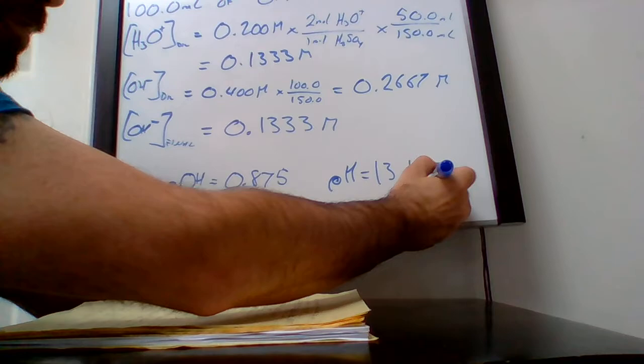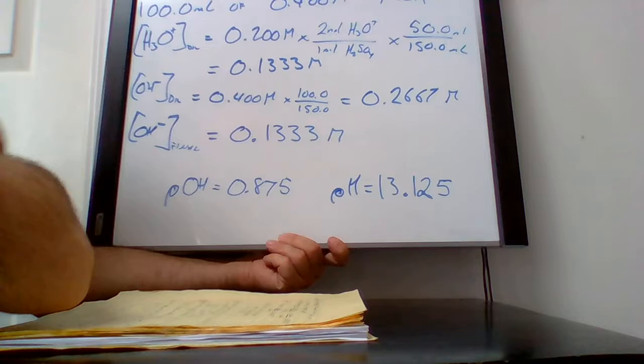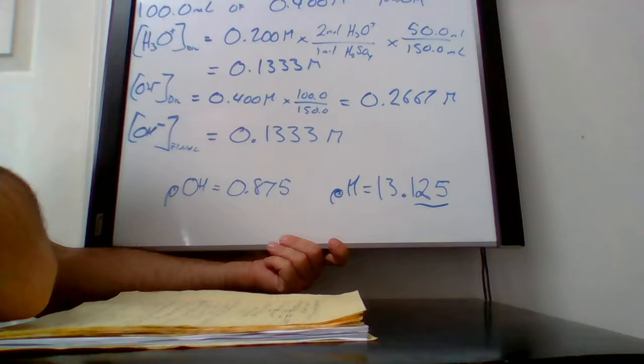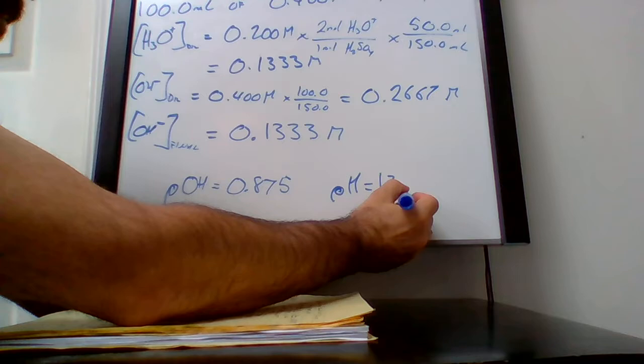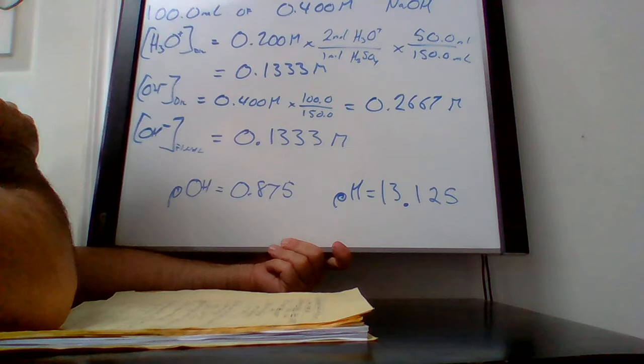pH equals 14 minus 0.875, giving 13.125. Since all original values have three sig figs, we need three decimal places in the pH, so the answer is 13.125.